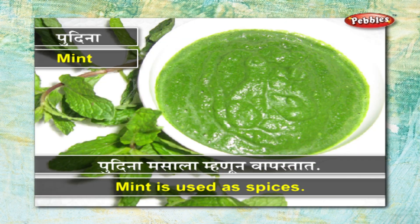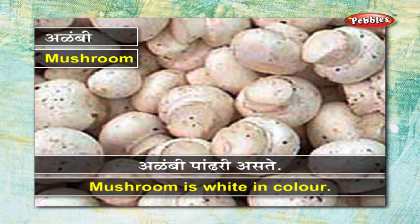पुदीना - पुदीना मसाला म्हणून वापरतात. अळंबी - अळंबी पांढरी असते.